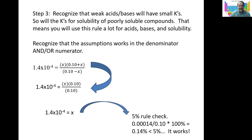We can check the 5% rule here. Take that and divide x divided by the original concentration, 0.10. And yeah, that's way less than 5%, so it works here.